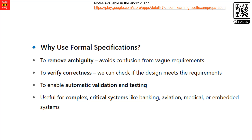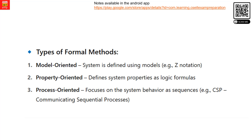Types of formal methods include: Model-oriented, which defines the system model; Property-oriented, which defines system properties as logical formulas (for example, Z notation); and Process-oriented, where system flow and sequences are defined by process-oriented methods. These are the three main formal methods.